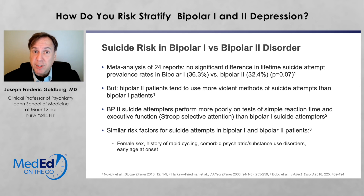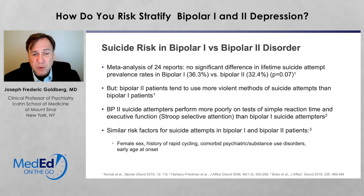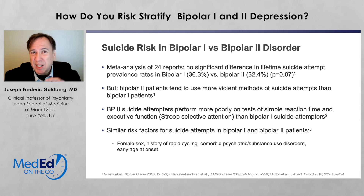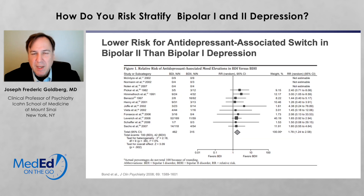Similar risk factors for suicide attempts in bipolar I and II patients include sex, presence or absence of rapid cycling, substance use comorbidity, other psychiatric comorbidities, and an early age at onset. So in many ways, bipolar I and bipolar II are more similar than different with regard to suicide risk. So where are bipolar I and bipolar II depression more different than similar? One realm here is the use of antidepressants.